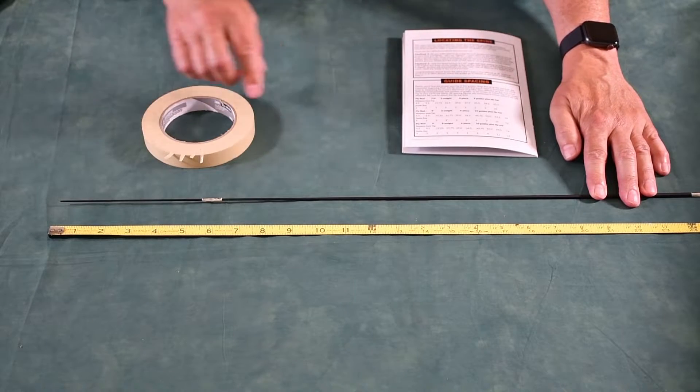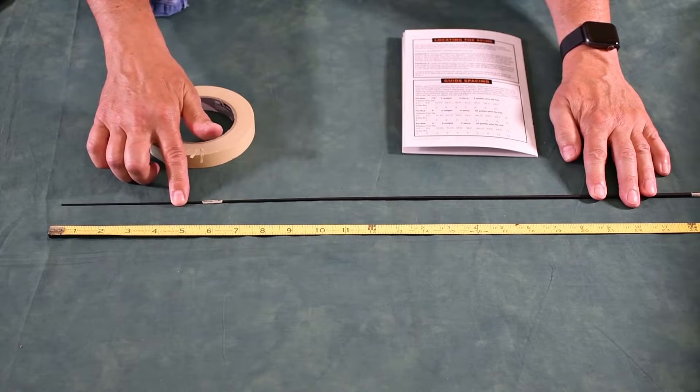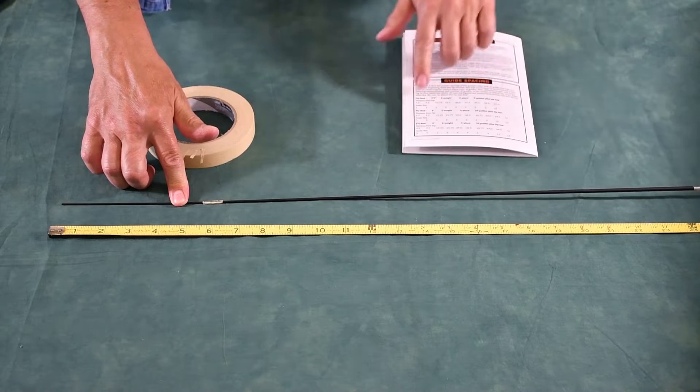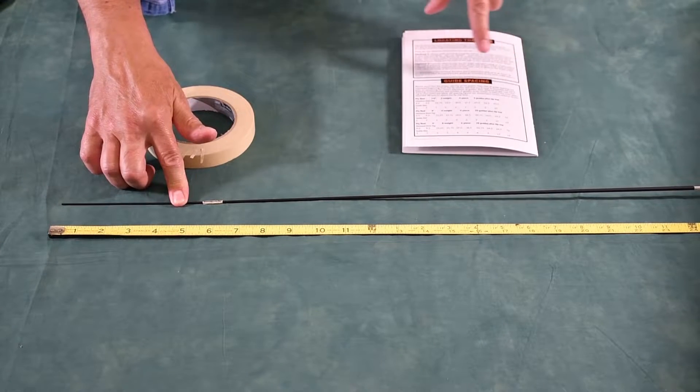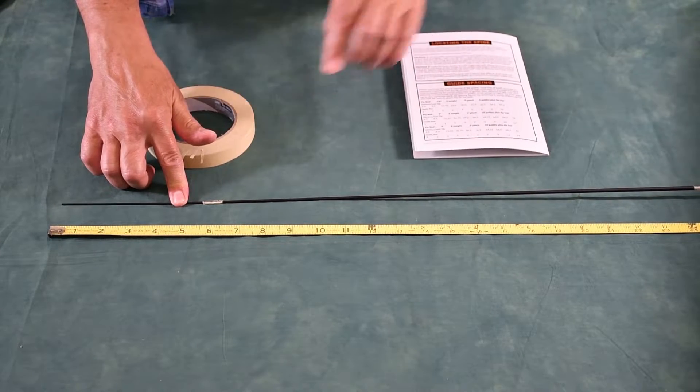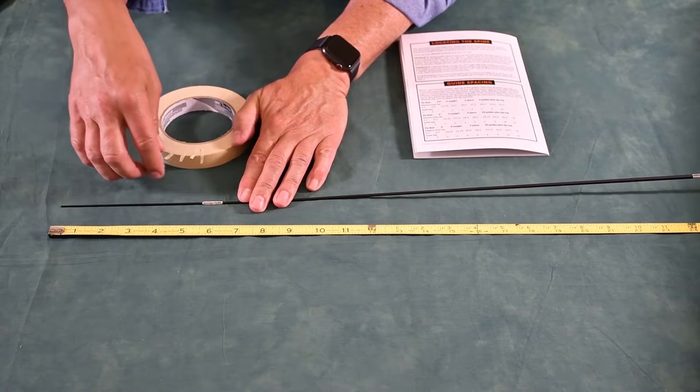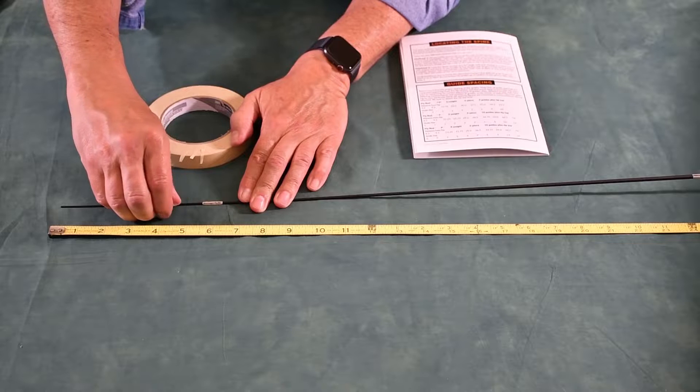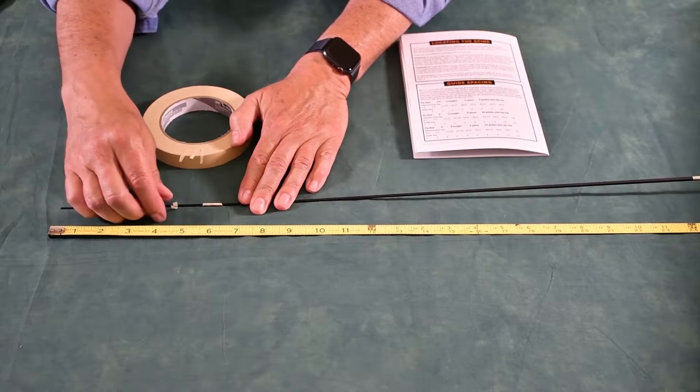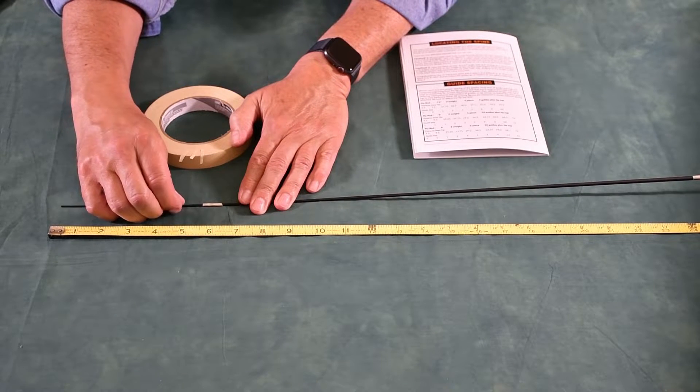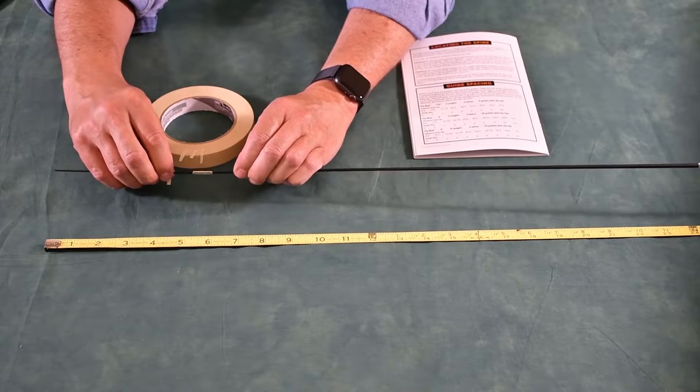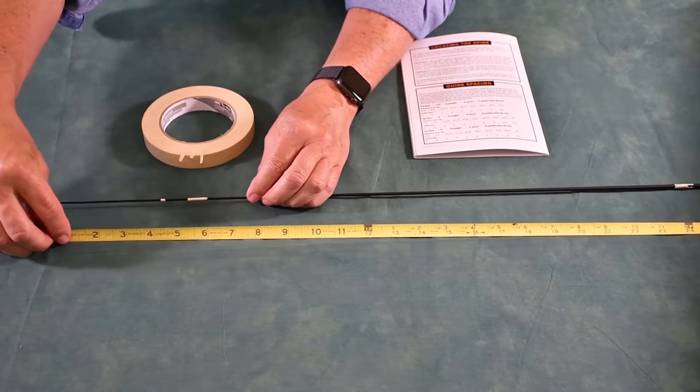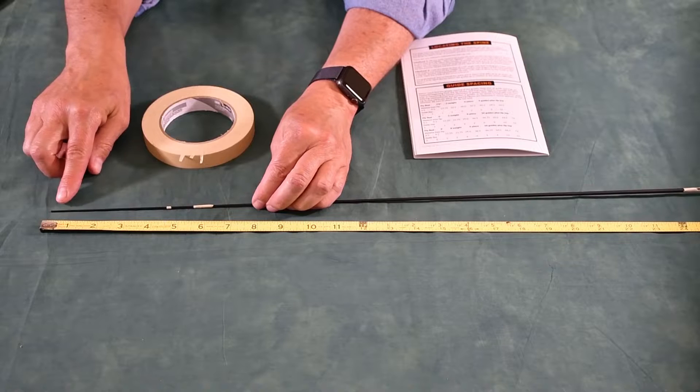Measuring from the tip of the blank downward, I know that the first guide goes at 4.5 inches as it corresponds in my directions, specifically the guide spacing chart. So right at 4.5 inches, I'm going to put a thin piece of tape, double-checking, move it down a little bit, where that first guide goes. There we go, right at 4.5.